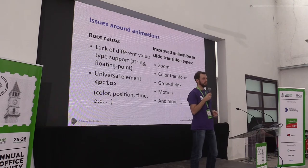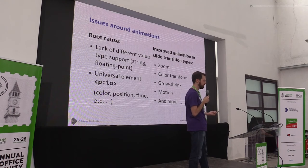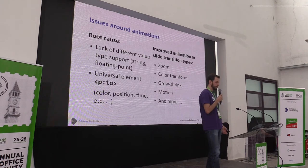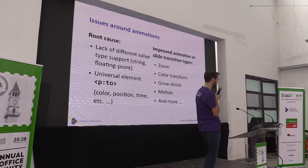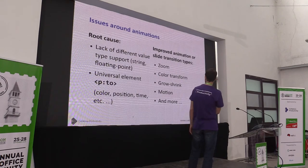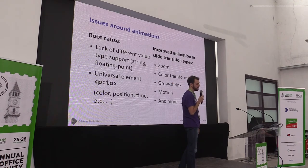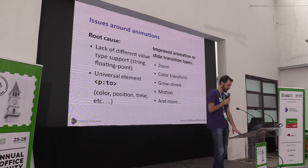Previously, only integer values were supported. So I added string type and floating point type to represent values like position or file path. This applies to zoom animation, color transform, screen motion, and many more.